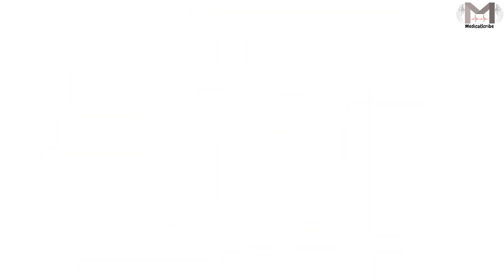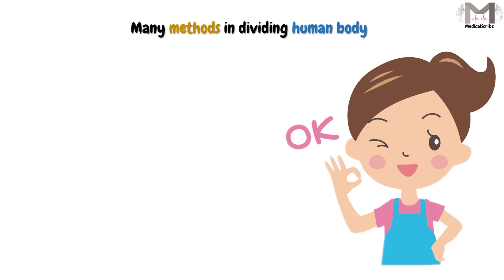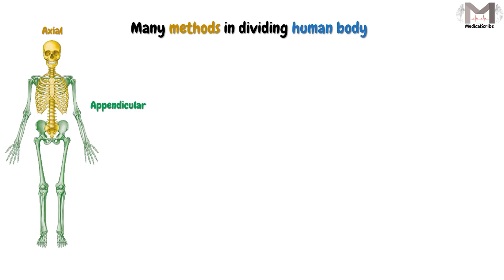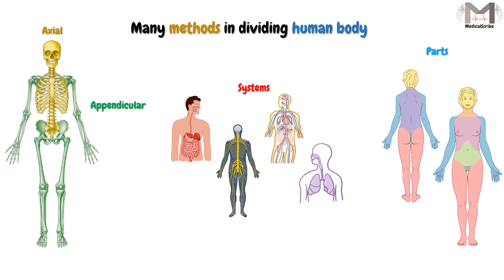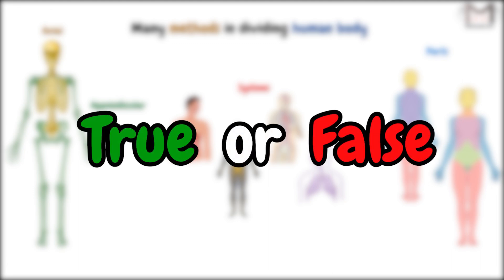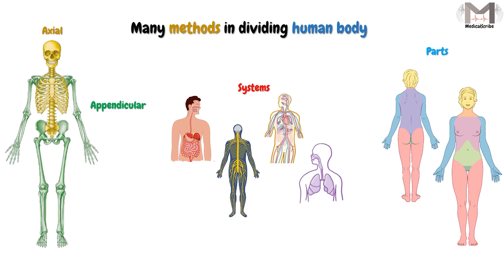Now, how many regions will the human body be divided into? First, let's agree that we will see many methods of dividing the human body — for example, into axial and appendicular, into systems, or into parts. There are many methods, but it doesn't mean one is true while the other is false. All these methods are used at particular times because they serve us and help describe things clearly. So keep in mind you will face many divisions — most of them are valid and used in their appropriate context.